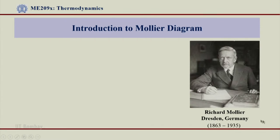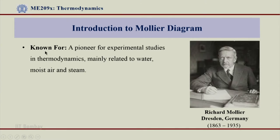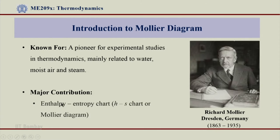This photograph is of Richard Mollier, who came from the Technical University of Dresden, Germany, with a lifespan from 1863 to 1935. Mollier is known as a pioneer for experimental studies in thermodynamics, mainly related to water, moisture, moist air, and steam. The major contribution from him is the enthalpy-entropy chart, or HS chart, or Mollier diagram. This is really the biggest contribution that has come from Mollier as a scientist.